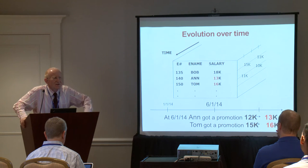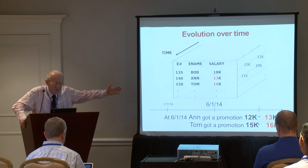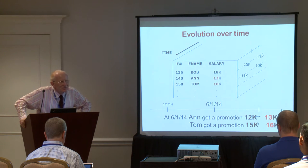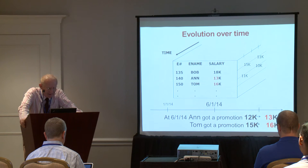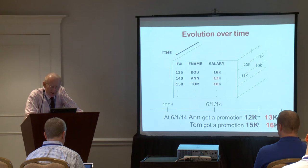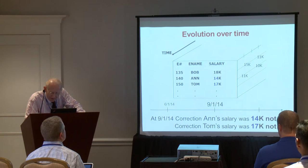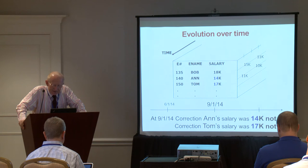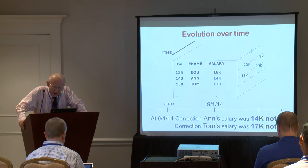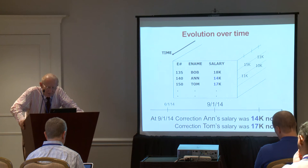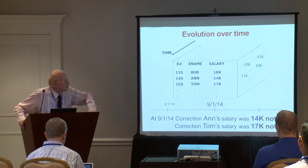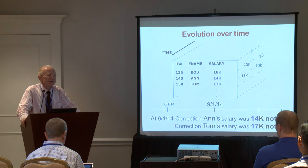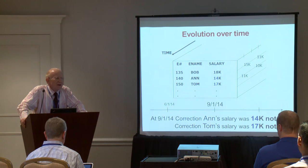These are the current values, with previous values behind them. Then at 9/1/2014 a correction occurs: the salary was actually 14K, not 13K, and Tom's salary was 17K, not 16K. What we see in the database is a correct and complete history. If you ask about salaries as of 10/1/2014, you get the correct values. But if you ask what was known as of 7/1/2014, you get the previous, incorrect values.